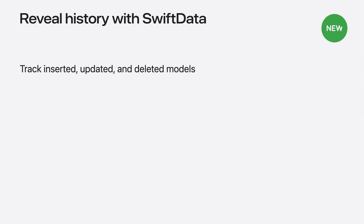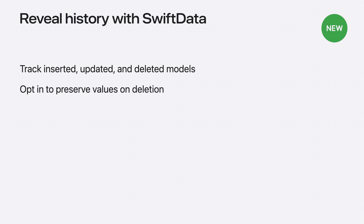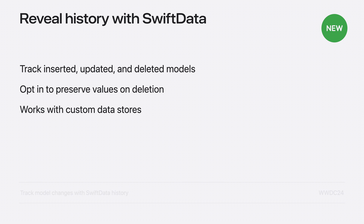Swift Data history provides a way for your app to know what models have been inserted, updated, or deleted over time. When models are deleted, values marked to be preserved are kept in the history information as tombstone values, giving your app the information it may need to process those changes. It also works seamlessly with custom data stores built to support it. To learn more, watch the video: Track model changes with Swift Data history.